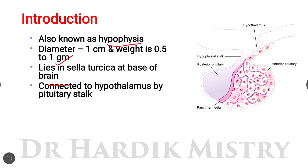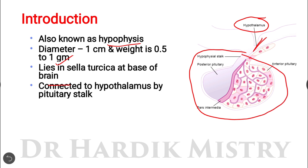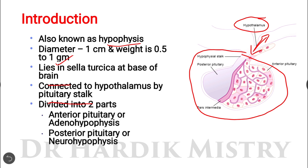The pituitary gland is connected to the hypothalamus by the pituitary stalk. Here we can see the hypothalamus and the pituitary gland. It is divided into two parts: the anterior pituitary, also known as adenohypophysis, and the posterior pituitary, also known as neurohypophysis.